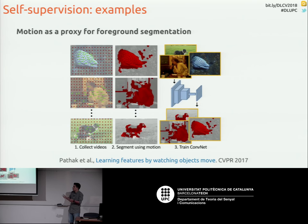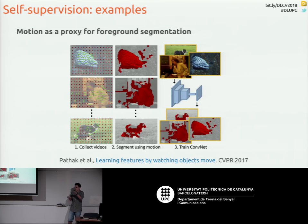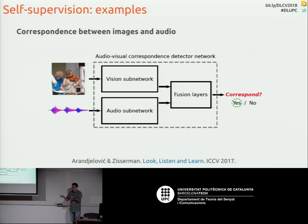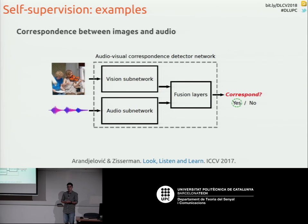ImageNet gives you labels at image level, so you need many tricks to use those models for something like segmentation that requires output of the same dimensionality as the input. Video gives you these labels for free. You can also exploit the fact that you have many modalities in video — you have the frames but also a soundtrack. You could predict one modality using the other, or tell whether given frames and a piece of audio match or not. That's another way to create a training signal.